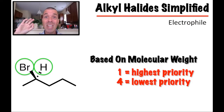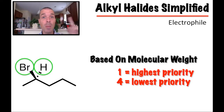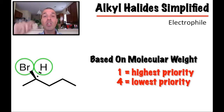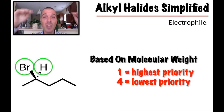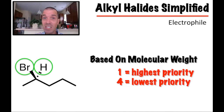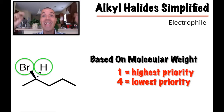We want to assign priorities based on molecular weight. Number one is the highest priority and number four is the lowest priority — meaning that atom has the highest or lowest molecular weight. Between the two non-carbons I've circled, which one would be the lowest? I want you to comment below. If you're confused or unsure, I want you to work it out here while we're practicing, so when you get to your exam it's easy and you've worked out all the kinks.